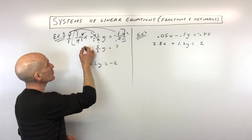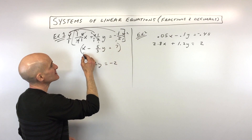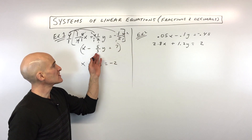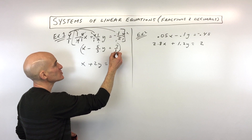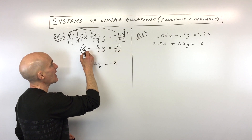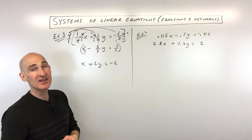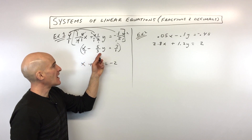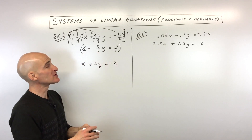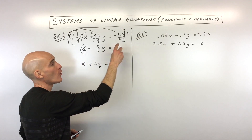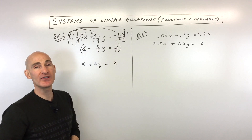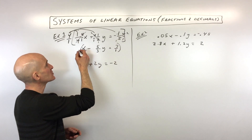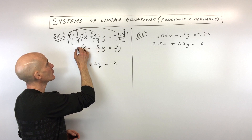Now, in the second equation, what can we multiply by to clear the denominators? You can see this has a denominator of 3. The other terms you can think of as having a denominator of 1, because anything divided by 1 is itself. So what's that lowest common denominator — the smallest number that 1 divides into and 3 also divides into? That's 3.